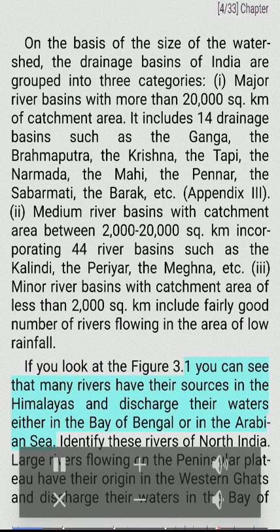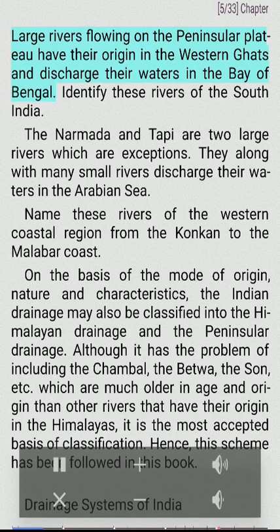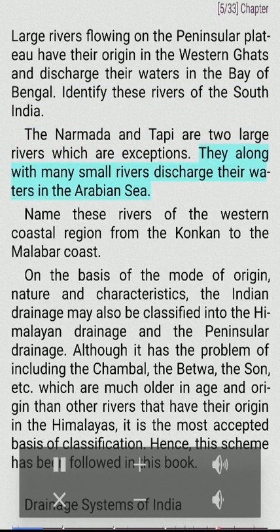Many rivers have their sources in the Himalayas and discharge their waters either in the Bay of Bengal or in the Arabian Sea. Large rivers flowing on the peninsular plateau have their origin in the Western Ghats and discharge into the Bay of Bengal. The Narmada and Tapi are two large rivers which are exceptions — they, along with many small rivers, discharge their waters in the Arabian Sea, along the western coastal region from the Konkan to the Malabar coast.